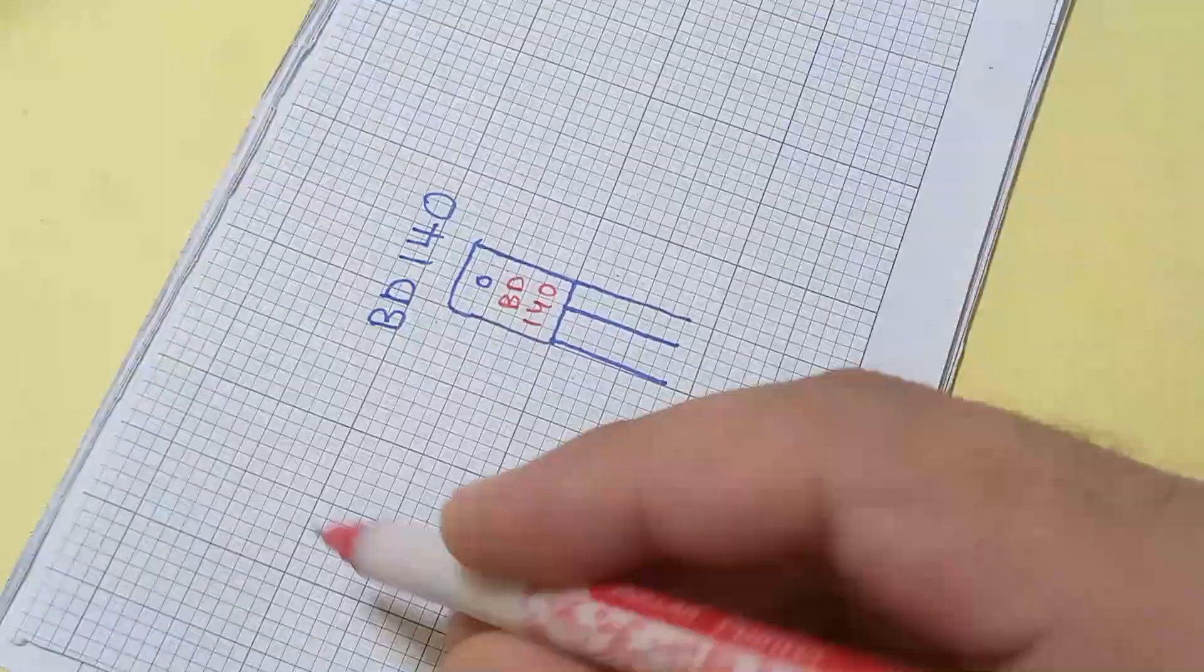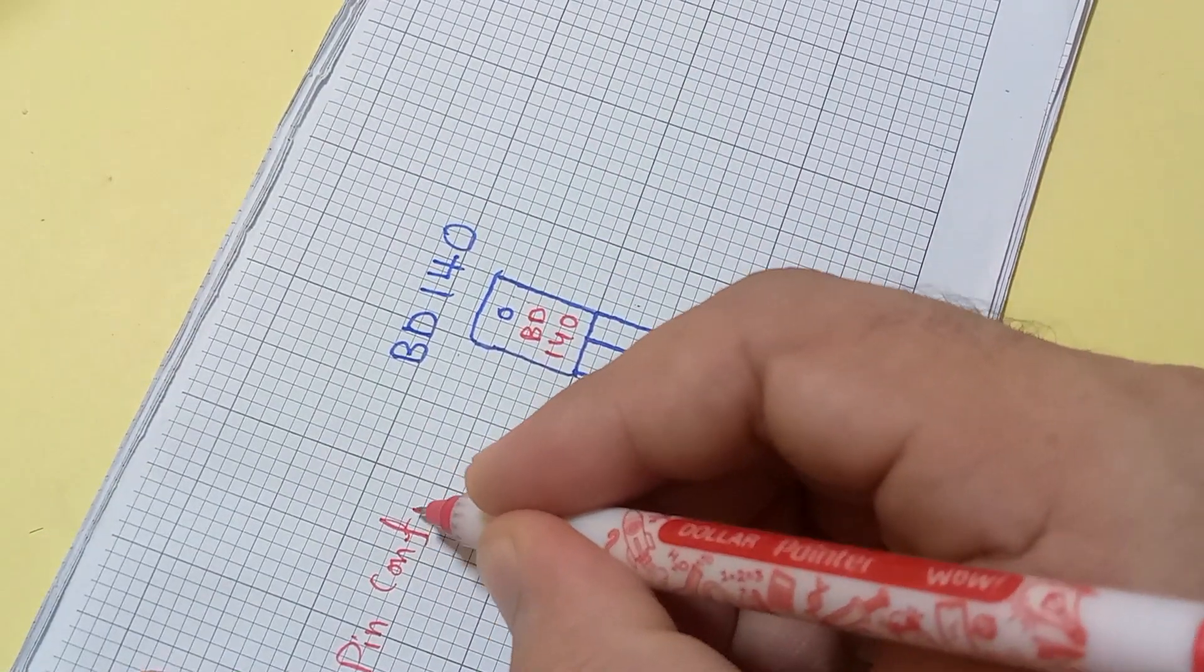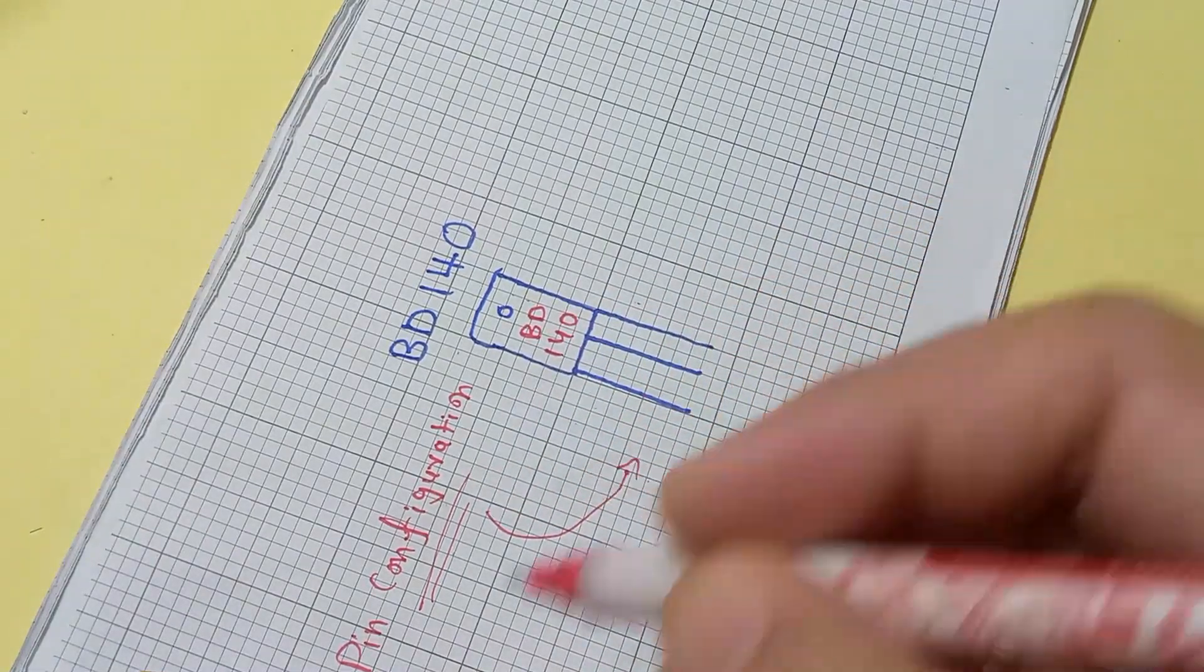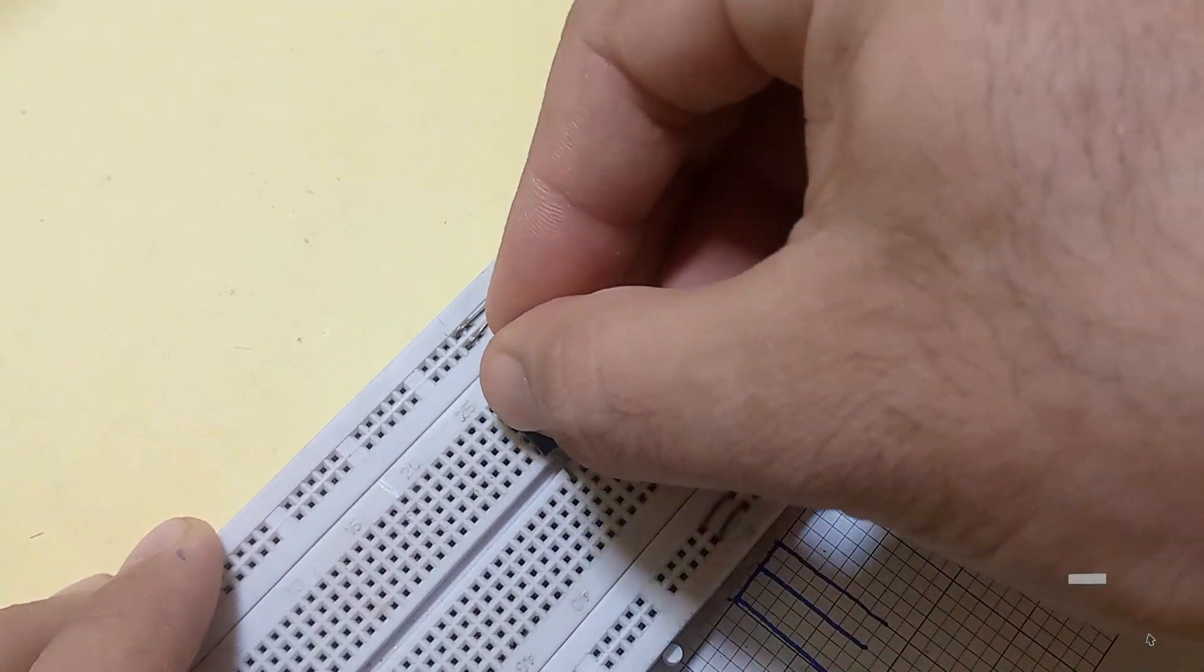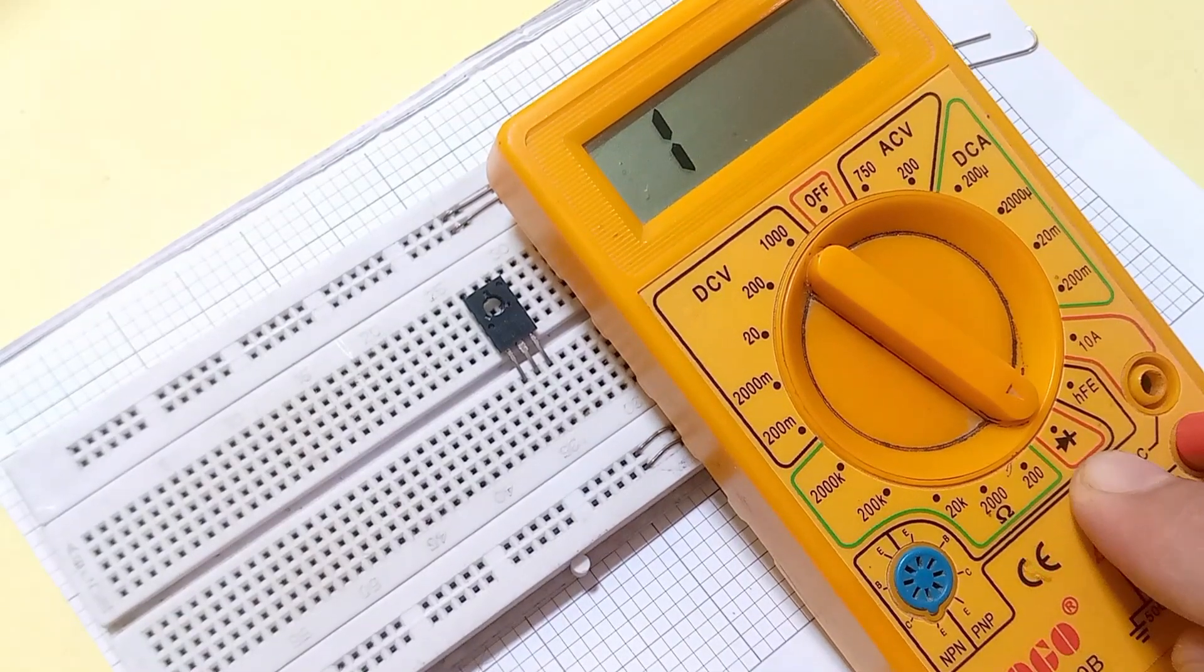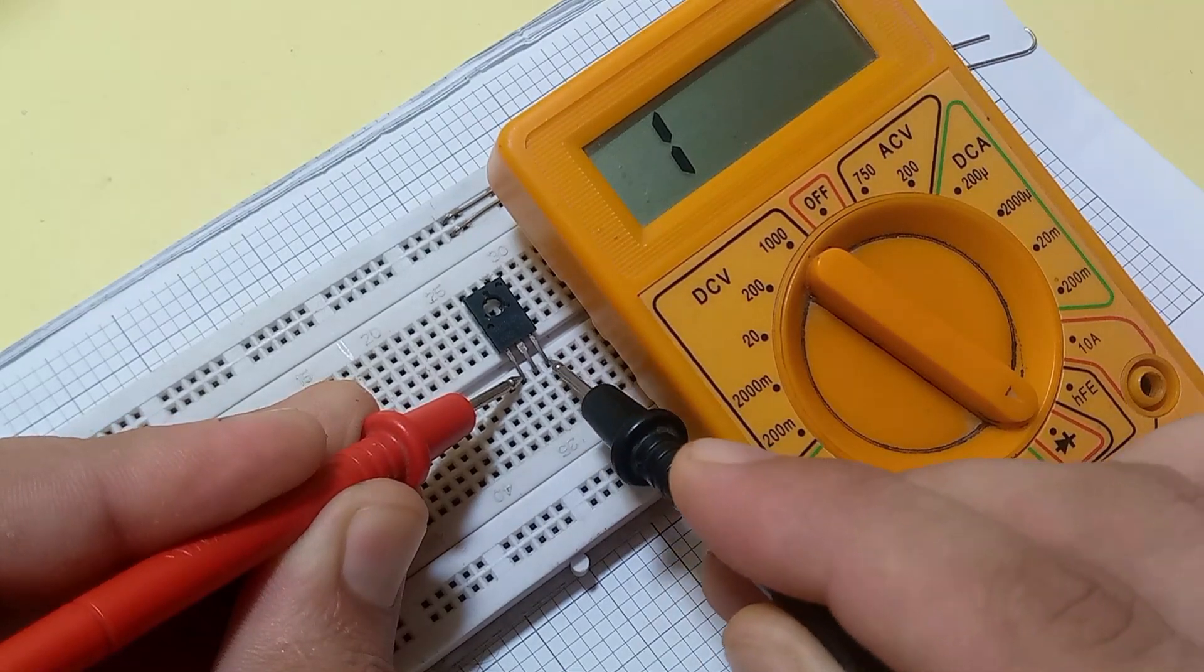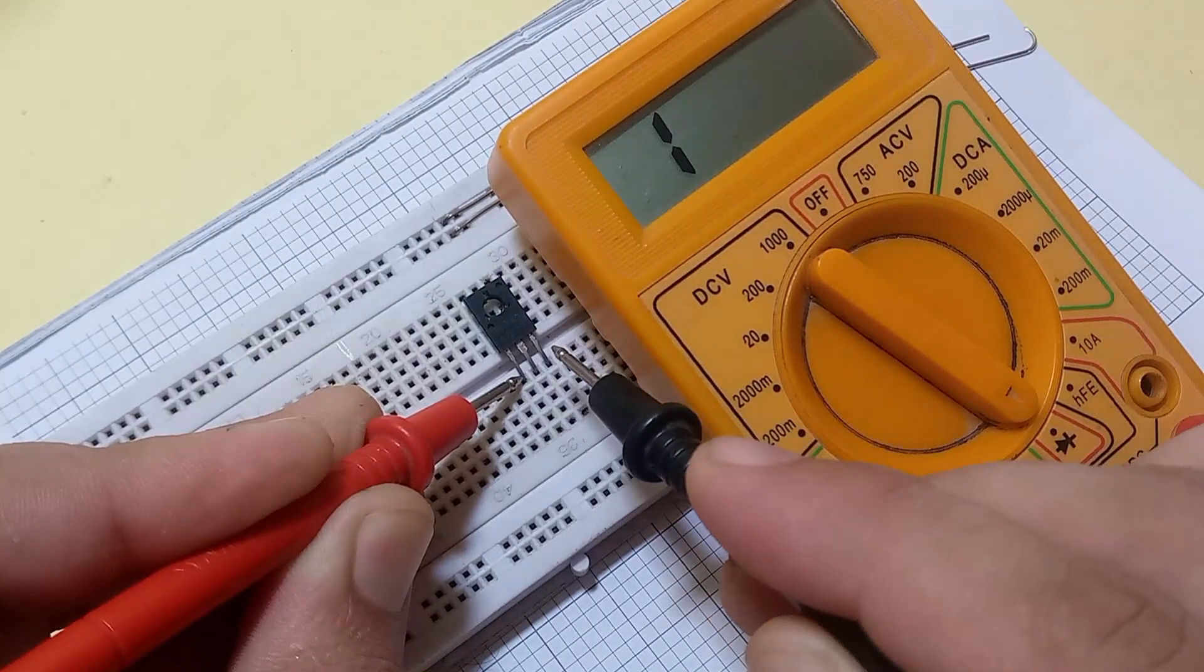The first question is how to find the pin configuration of BD-140 transistor with the help of multimeter to observe the correct reading. Fit the transistor in the breadboard and now move the selector towards the diode mode. The most important point is that for all types of transistors, base is common.